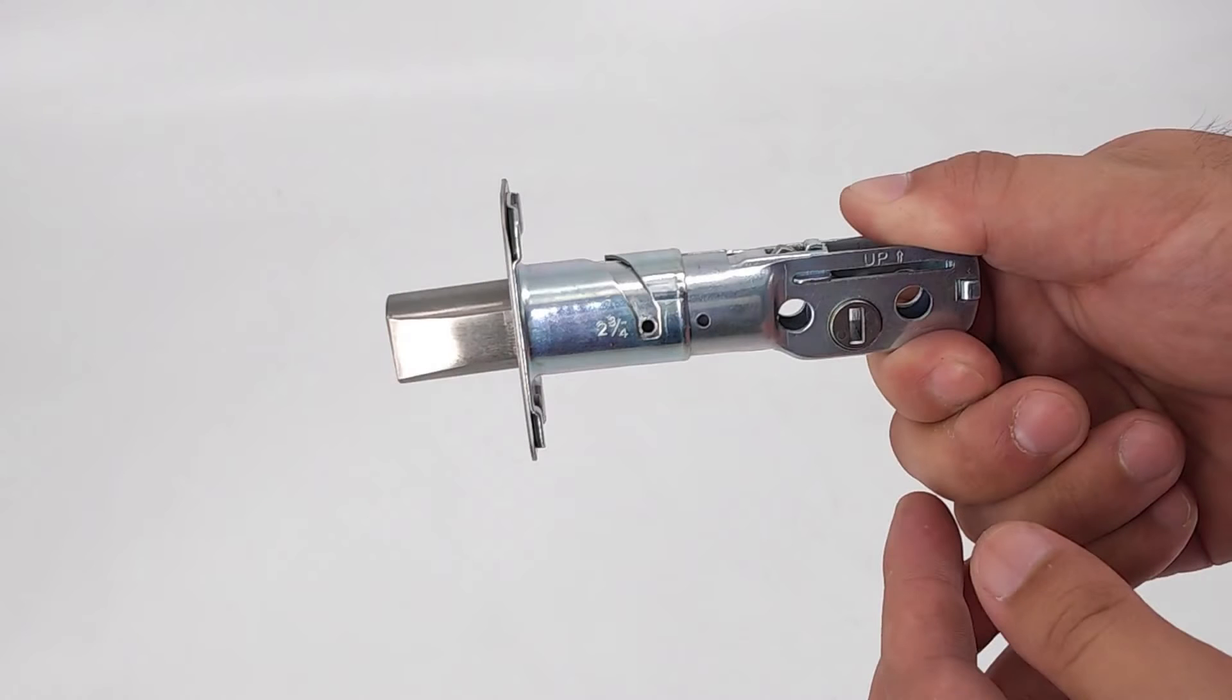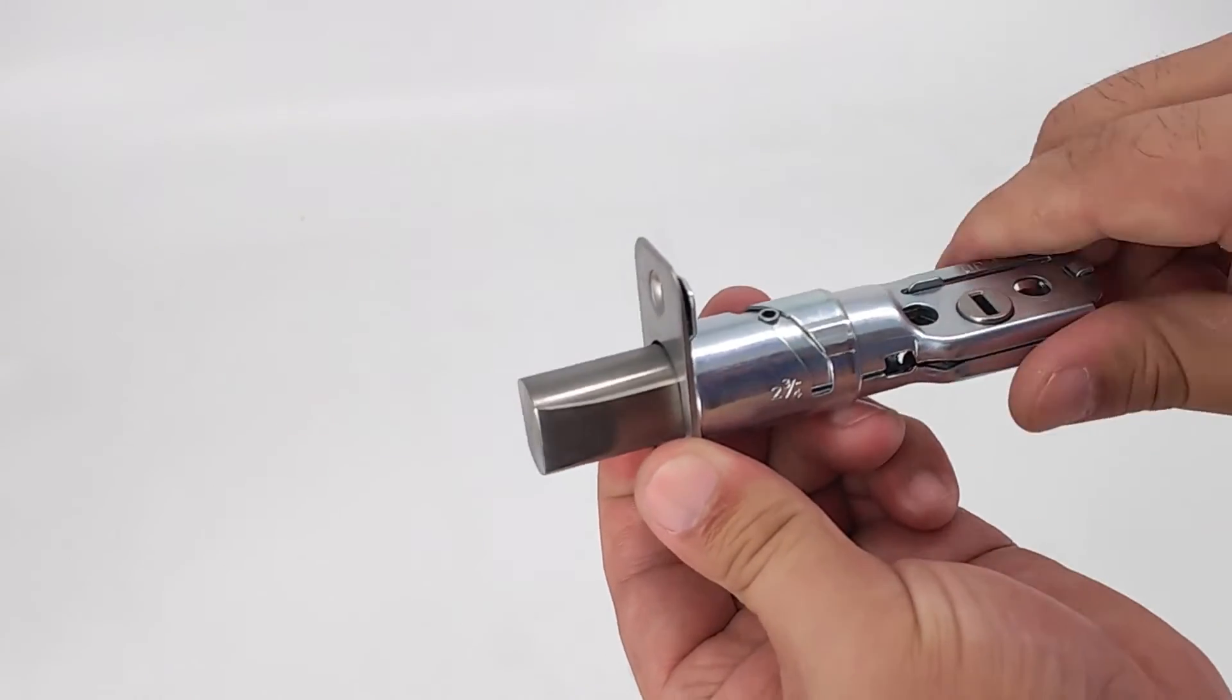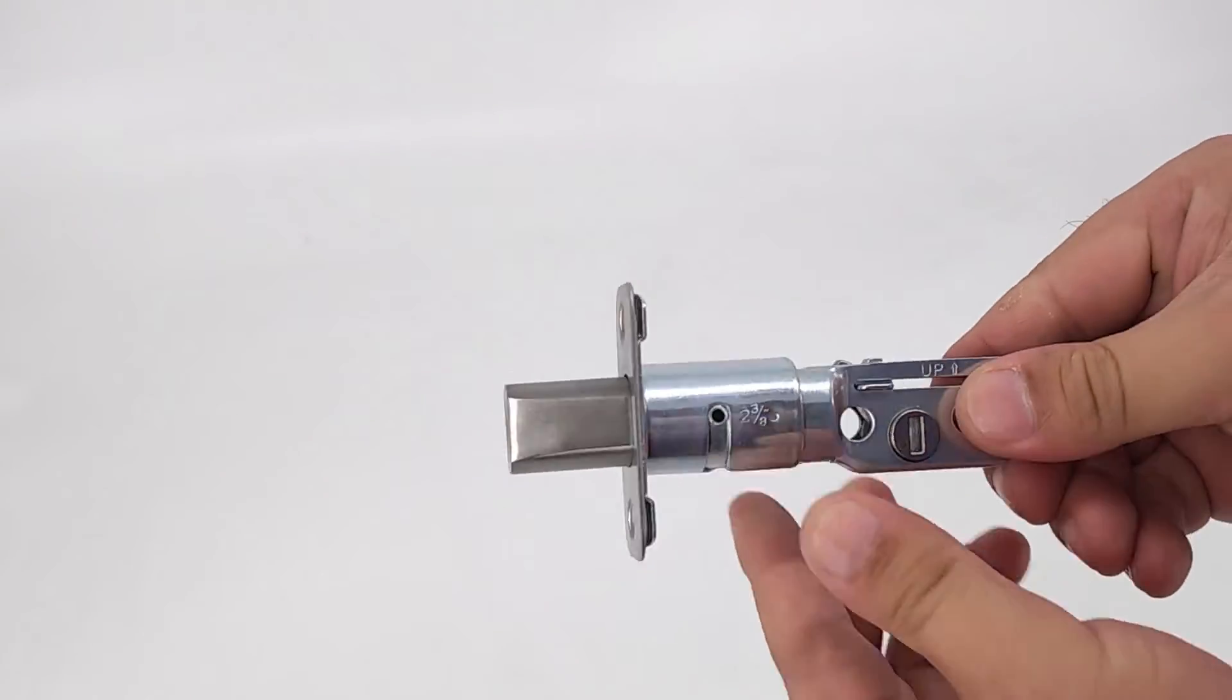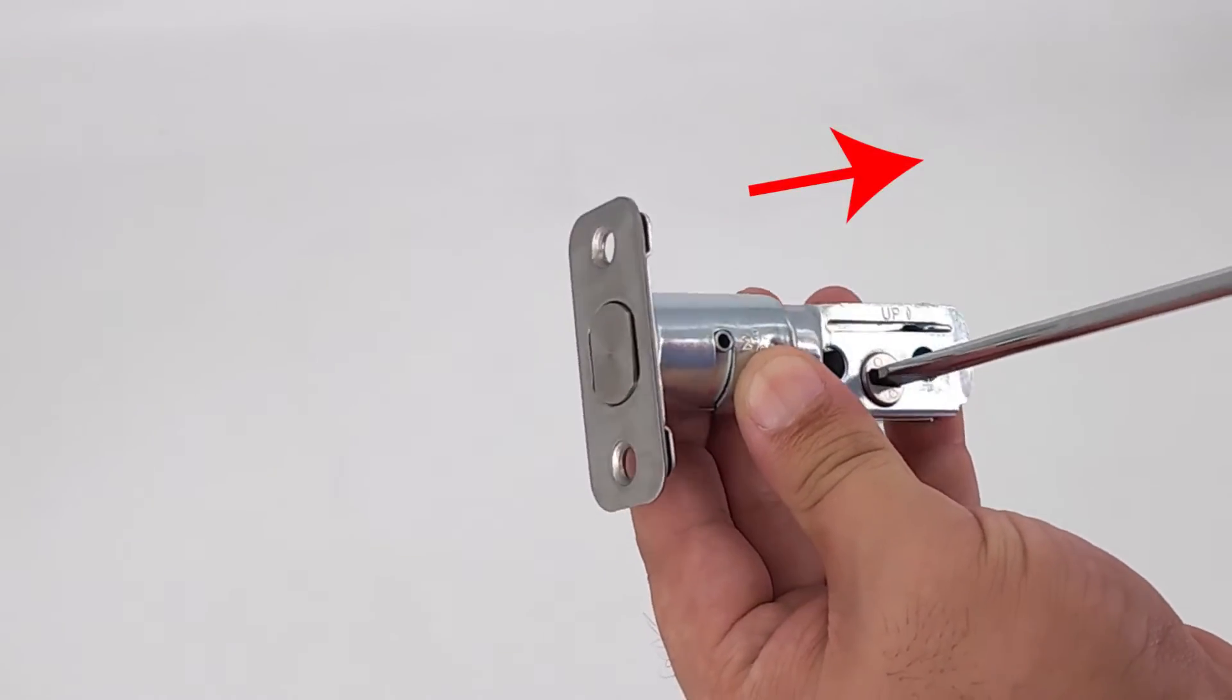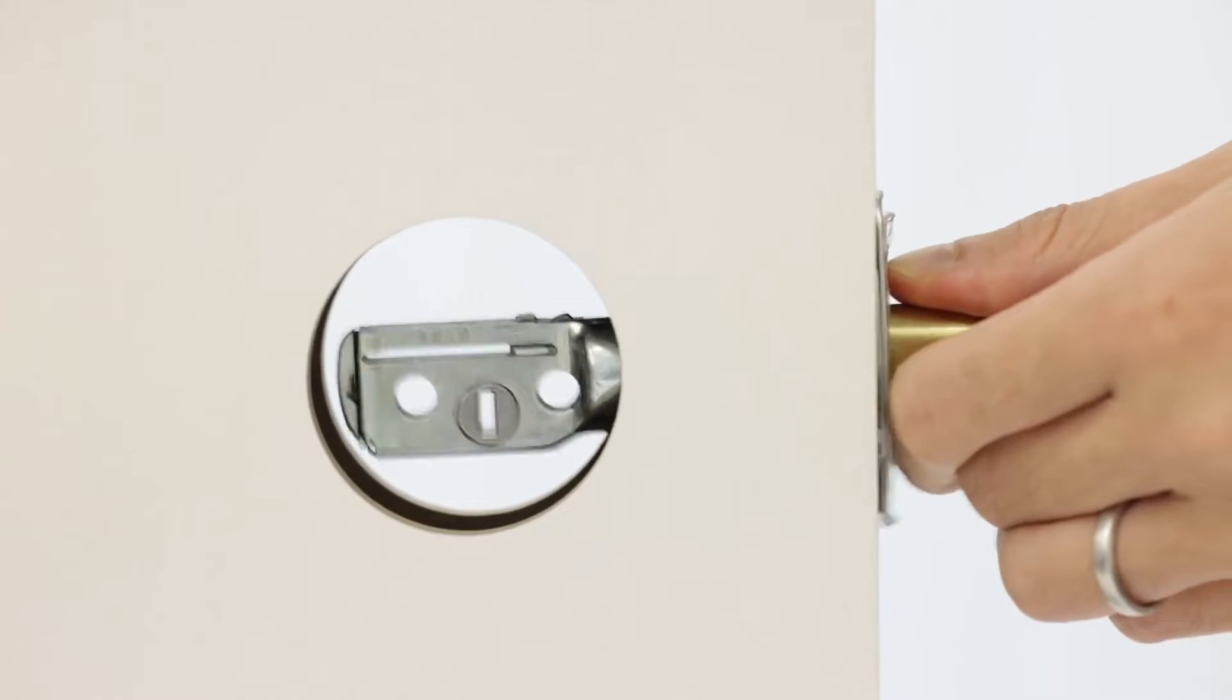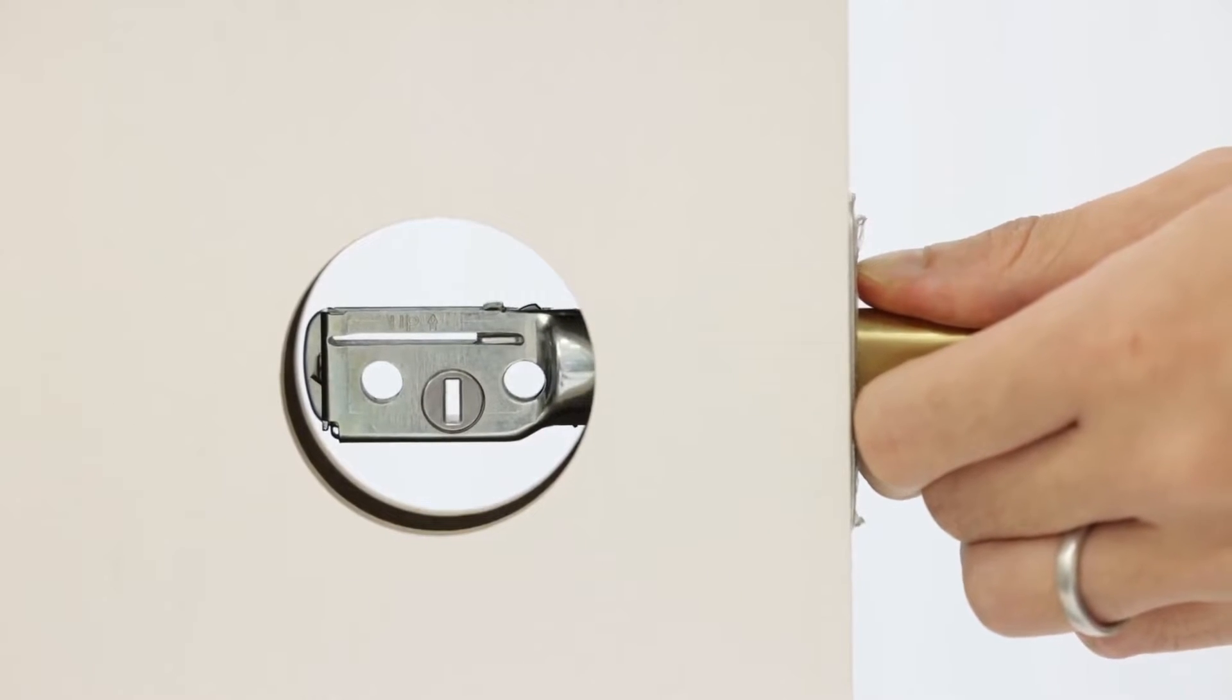To return to default status, while the deadbolt is extended, hold the metal plate and twist the deadbolt body counterclockwise till it snaps to 2 and 3/4. Deadbolt slot must align to the center of the door hole.